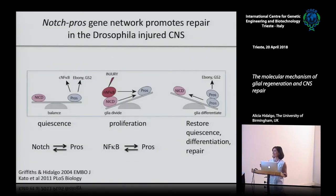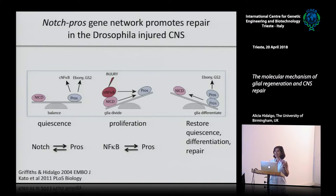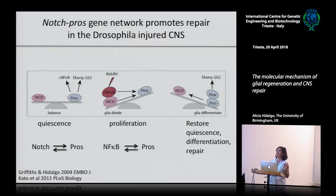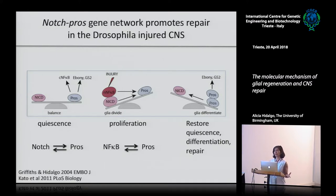The take-home message is: these neuropil glia normally don't divide, but they are maintained quiescent in G1 - they don't exit the cell cycle. They are there resting, waiting for things to happen. They are able to stay in this state because they have active both Notch and Prospero - they are Notch-positive and Prospero-positive. Notch is an activator of cell proliferation and Prospero is an inhibitor. Because they maintain each other but have opposite effects on the cell cycle, glial cells cannot divide - they stay in G1.